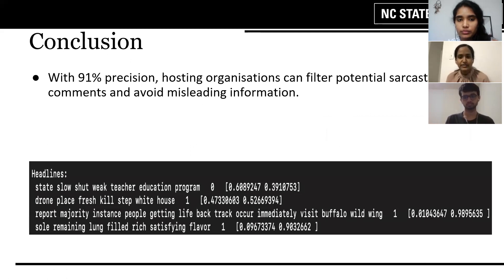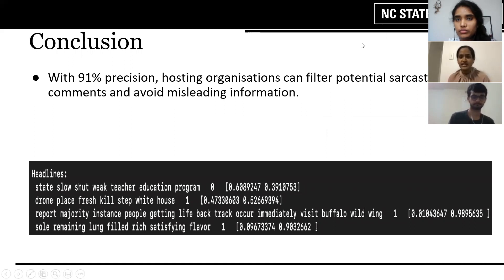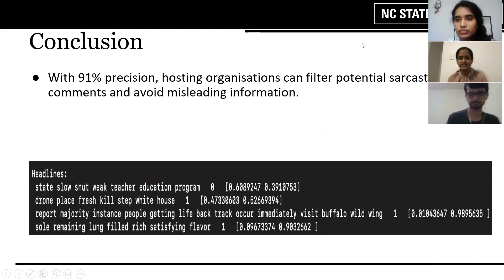BERT has an overall precision of about 0.91, which helps hosting organizations filter potentially sarcastic comments and avoid misleading information. We can see examples of potentially sarcastic comments in the image, with the actual labels as well as probabilities of both classes. Thank you.